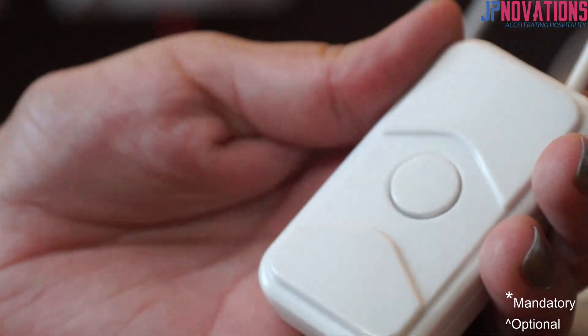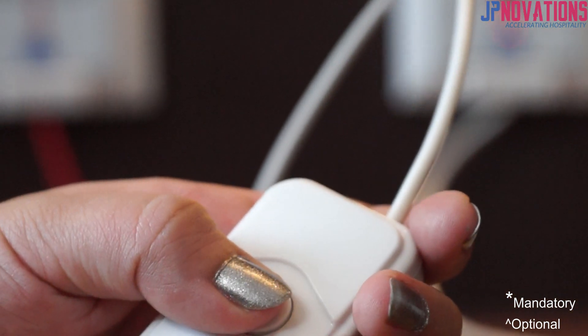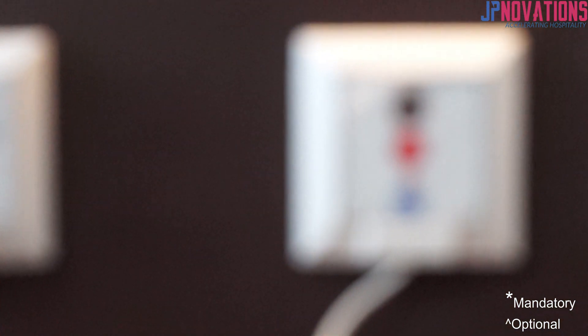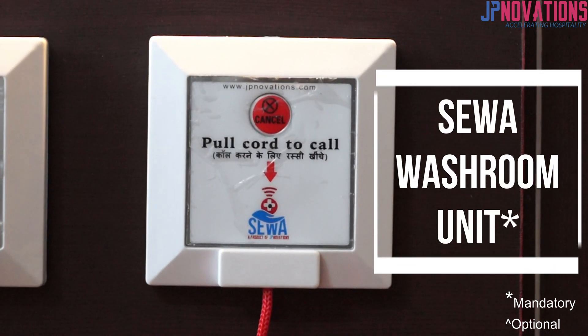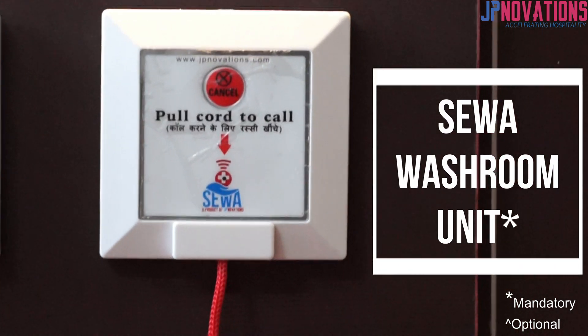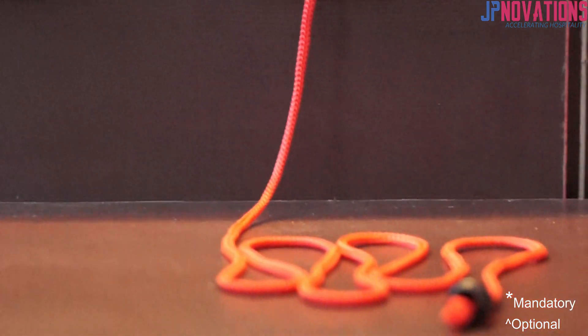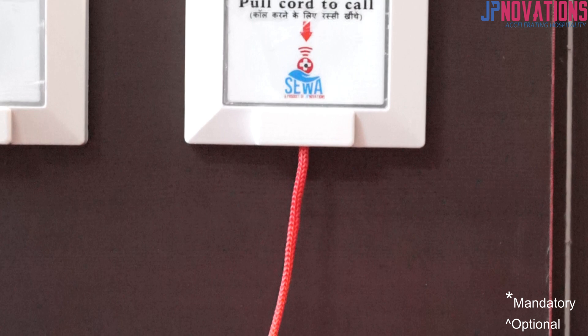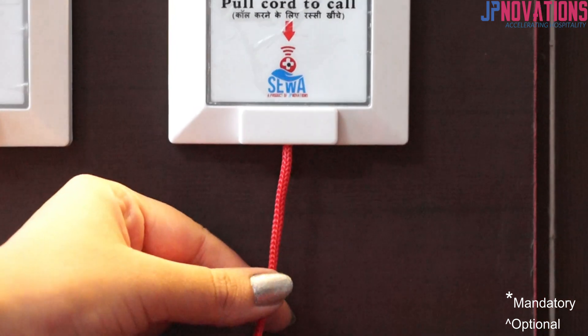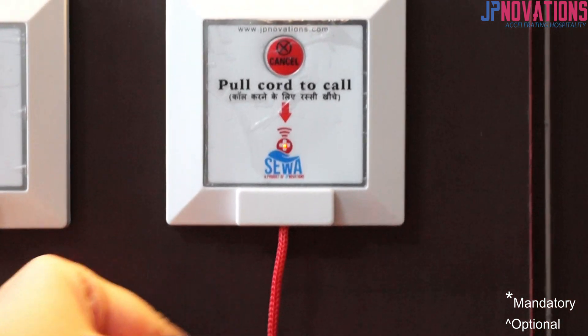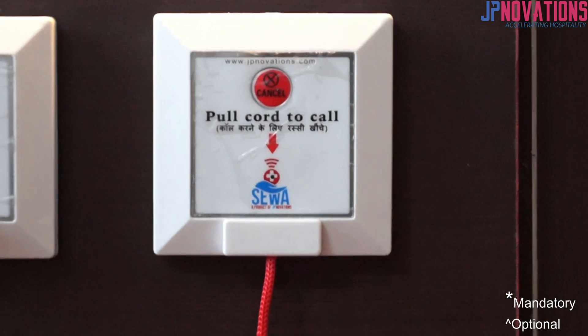This is the Sever washroom unit, equipped with one meter of pull cord for ease of patients in case of any emergency in the toilets or the washrooms. A gentle pull on the cord will help to send the call to the nurse station and deal with the emergency situation.